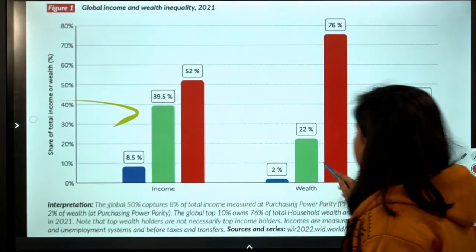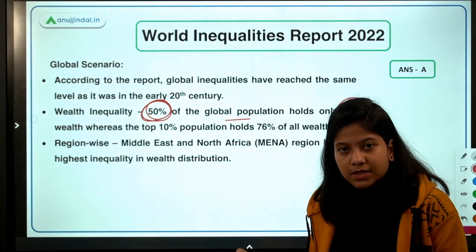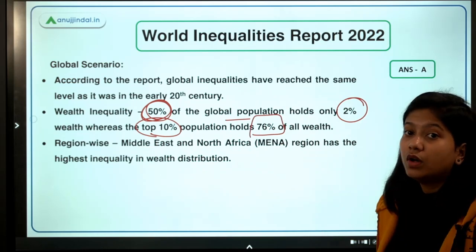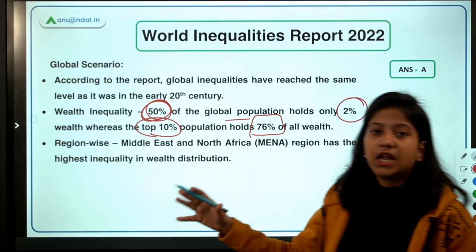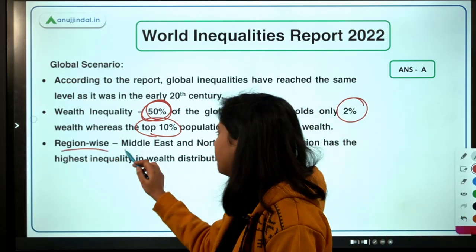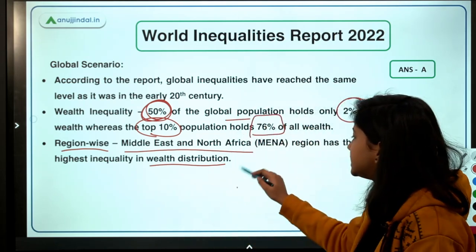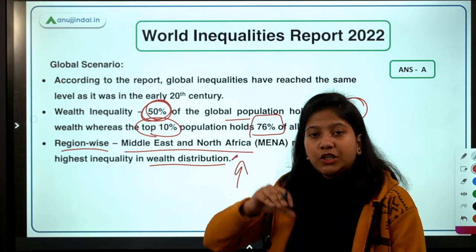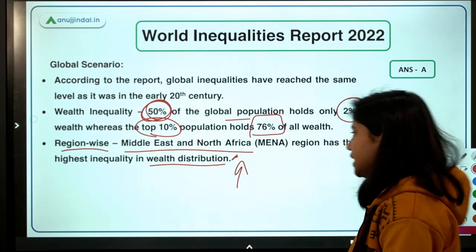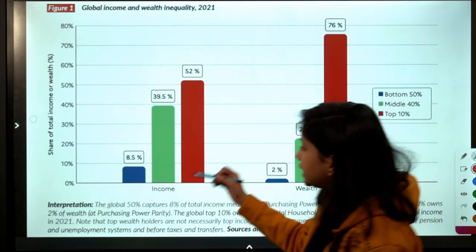On wealth inequality: 50 percent of the global population holds only 2 percent of global wealth. The top 10 percent — including all the millionaires and billionaires of the world — hold 76 percent of all wealth. Region-wise, the Middle East and North Africa region has the highest wealth inequality, where the richest 10 percent hold the majority of wealth compared to the bottom 50 percent.